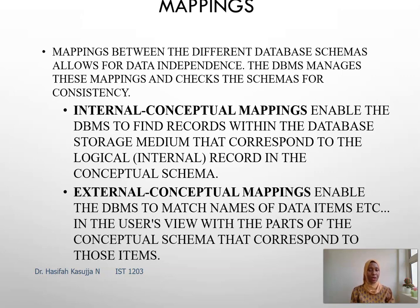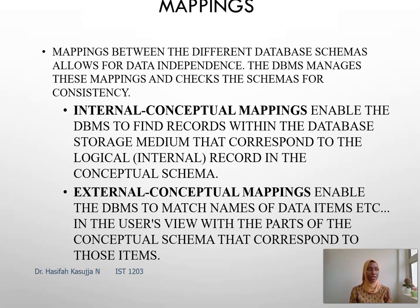Then we have the external-conceptual mapping, where the database tries to match the data elements of the user's view to part or all of the data elements at the conceptual schema. Why part or all? Because what one user view has could be different from what another user view has at the external level. However, at the conceptual level it tries to match the different data elements of the different users such that you have one global storage. Whenever you're looking at mapping, think of it as your five fingers on the right and five fingers on the left — when you bring your palms together, they should map and match.